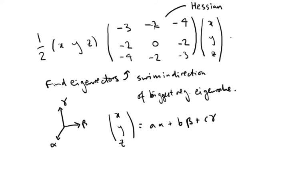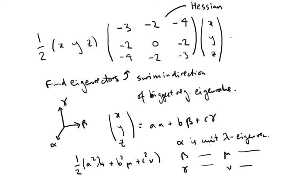Then this whole expression diagonalizes, and we just get this term is half, well, alpha squared times lambda plus beta squared times mu plus gamma squared times nu, where alpha is a unit lambda eigenvector. So beta is a unit mu eigenvector, and gamma is a unit nu eigenvector.